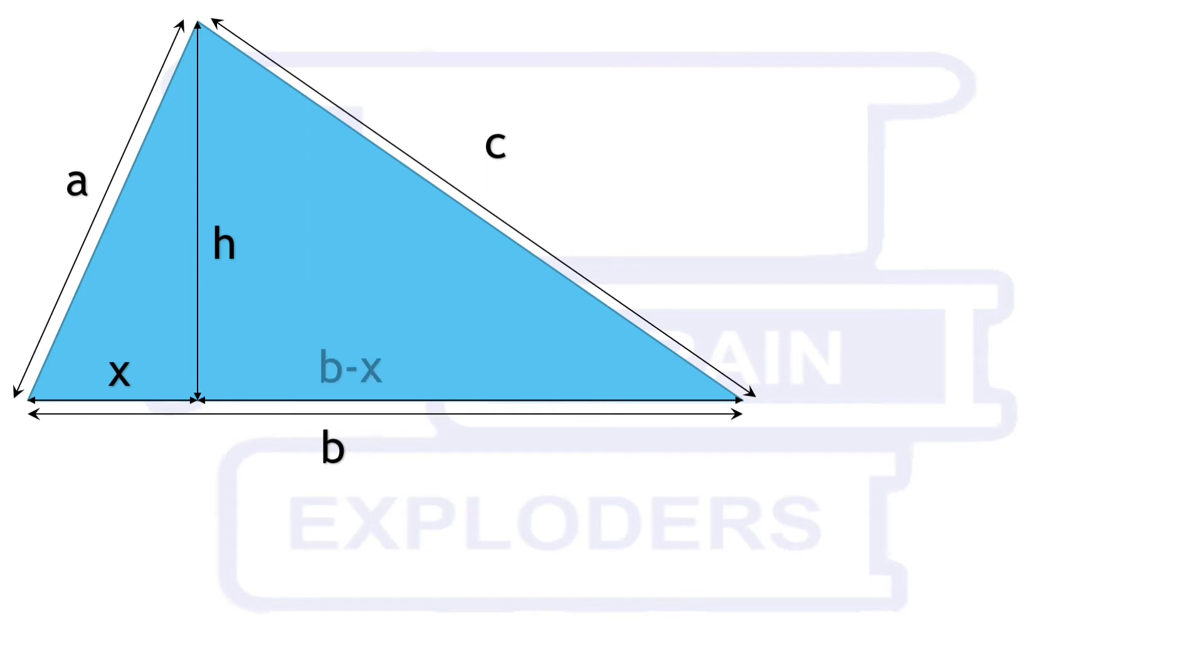Apply the Pythagoras theorem in the two right-angled triangles formed due to its altitude. We get H squared equals A squared minus X squared equals C squared minus (B minus X) whole squared. On solving this we have X equals (A squared plus B squared minus C squared) over 2B.